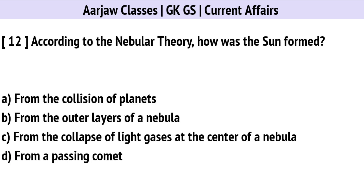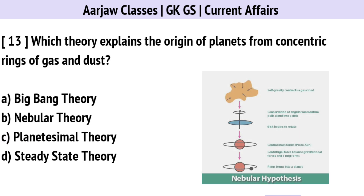According to the Nebular Theory, how is the Sun formed? Correct option is C: From the collapse of light gases at the center of a nebula.